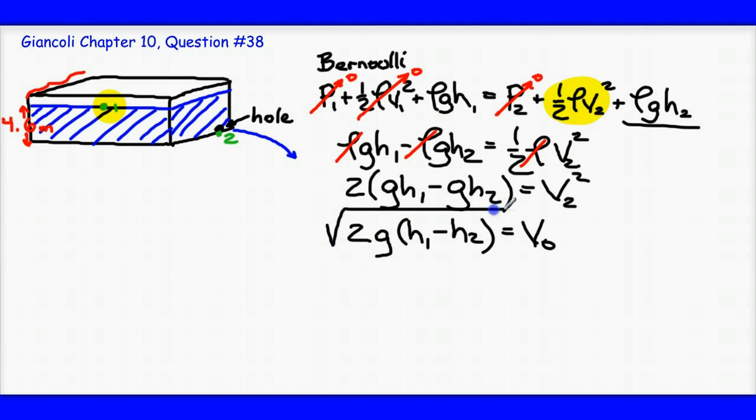And then, I'll take the square root of both sides. So, the height at 1 is 4.6 higher than the height at 2. So, when I substitute these numbers in, I'm going to get root 2 times 9.8 meters per second squared times the height at 1, which is 4.6 meters minus 0 meters, the height at 2.